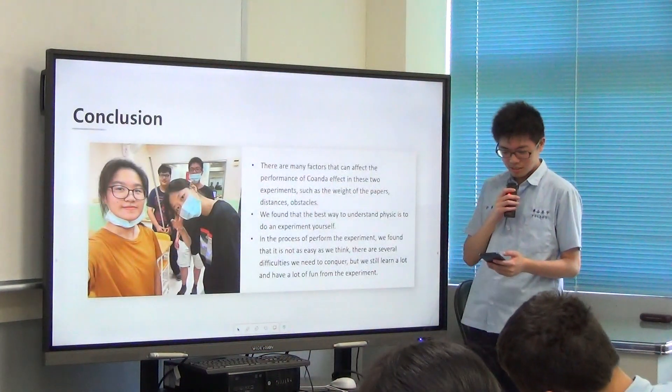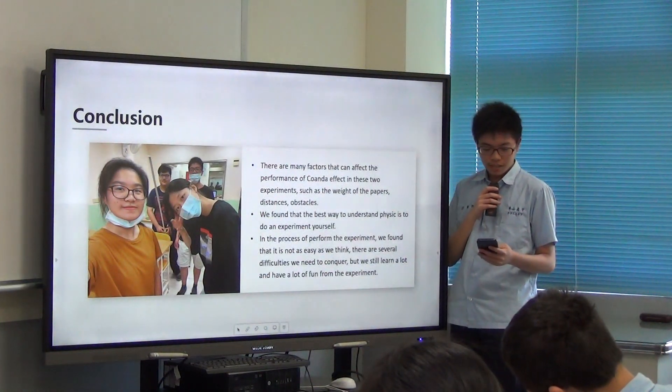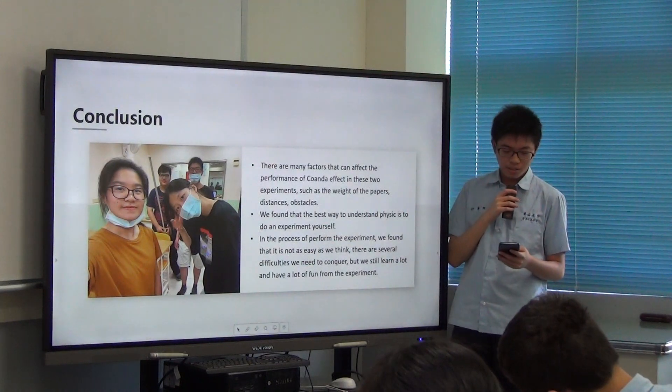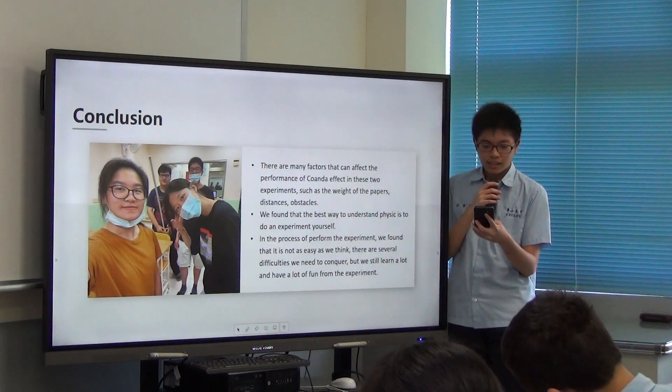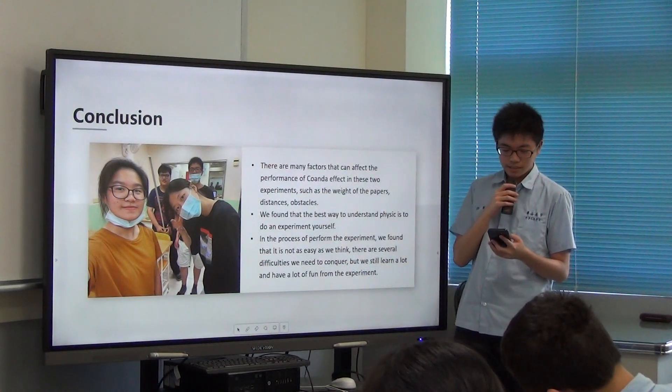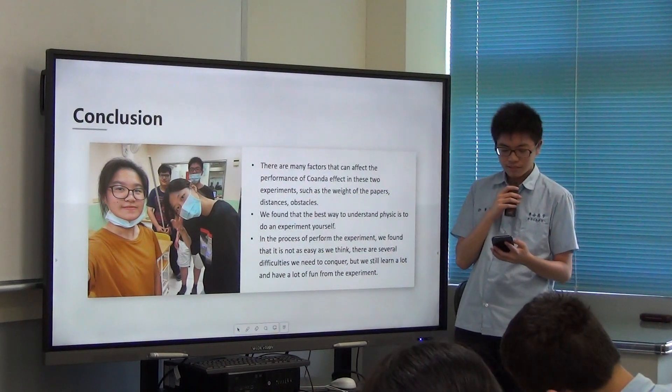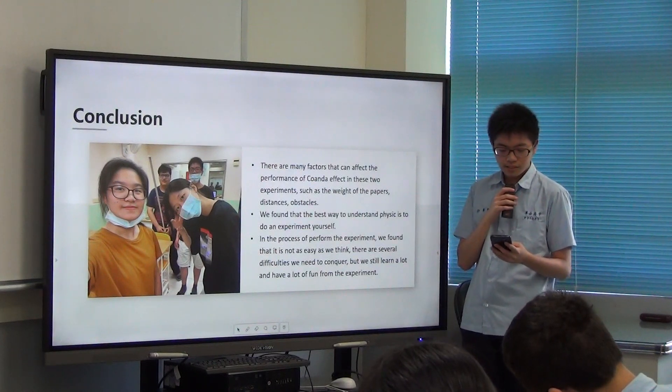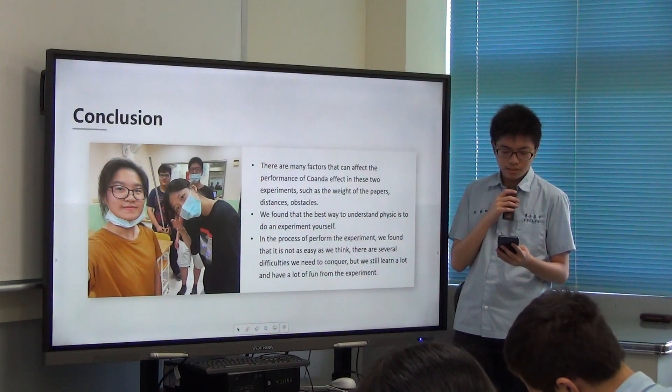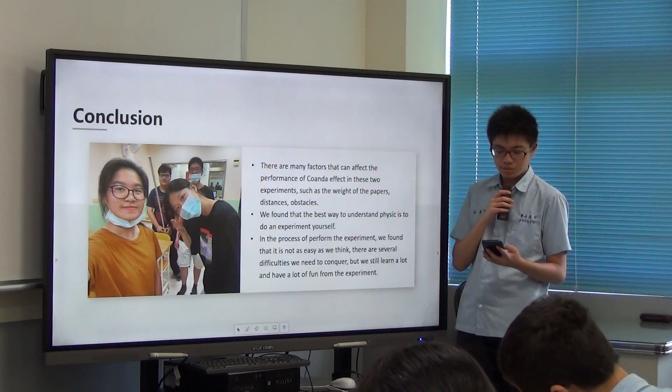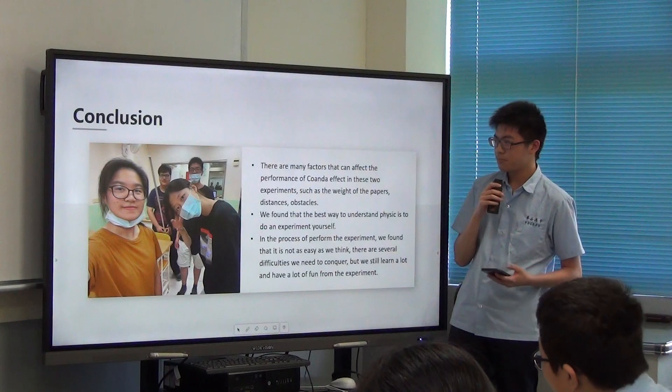So here is the conclusion. The lighter or less distance paper is more easily to push down, and the candles will be more easily to blow out if the obstacle is smaller. In this experience, we have found that the result will be affected by the weight of paper, distances, and obstacles. In the process of this experiment, we met some difficulties, such as how to control the force of the air and the distance. And we didn't control it precisely every time, so we think we can do better next time.